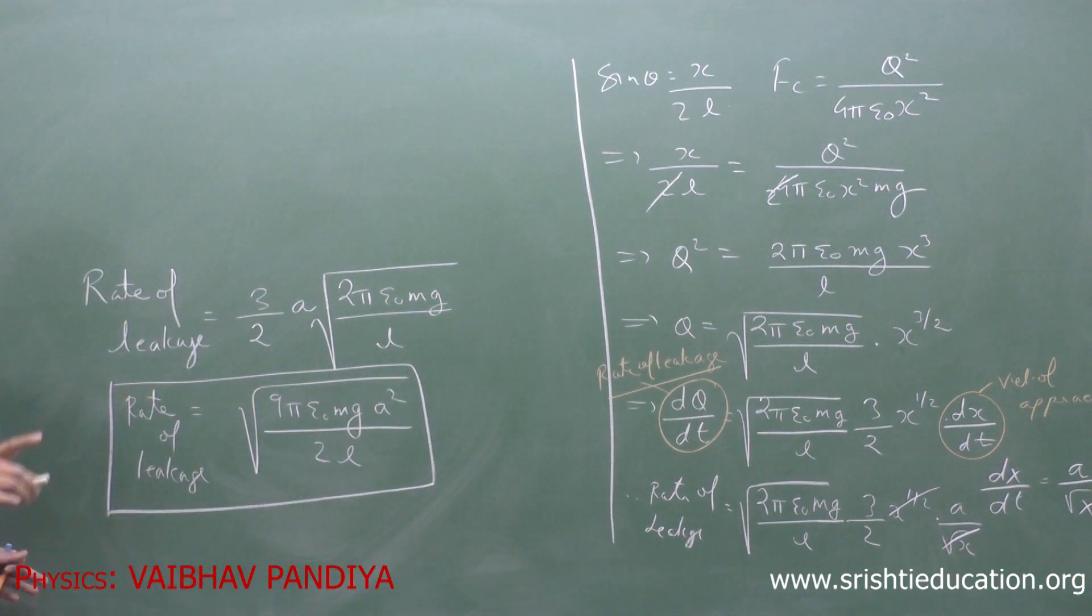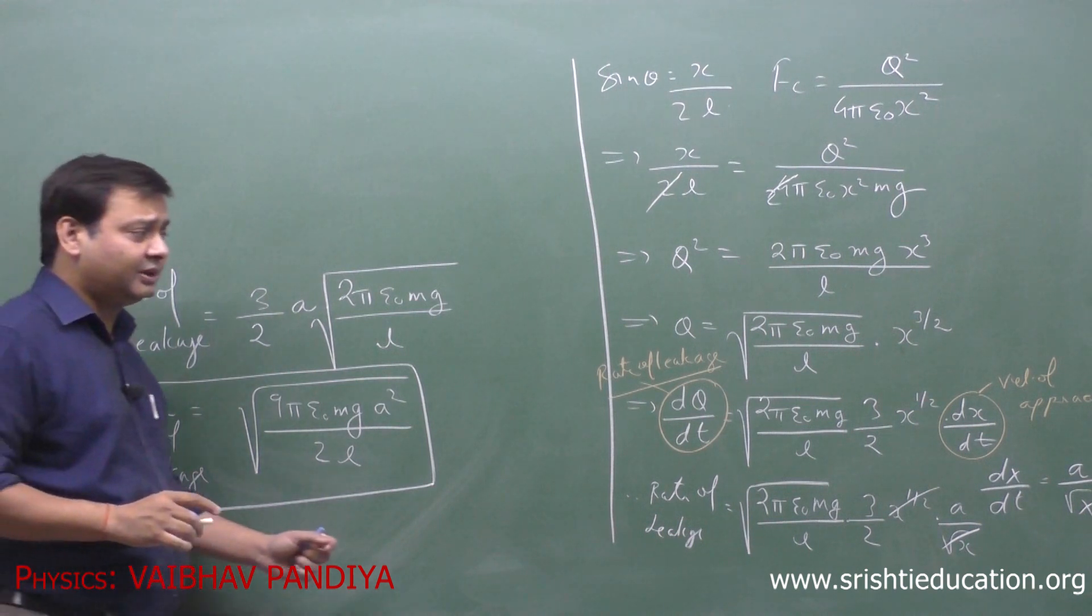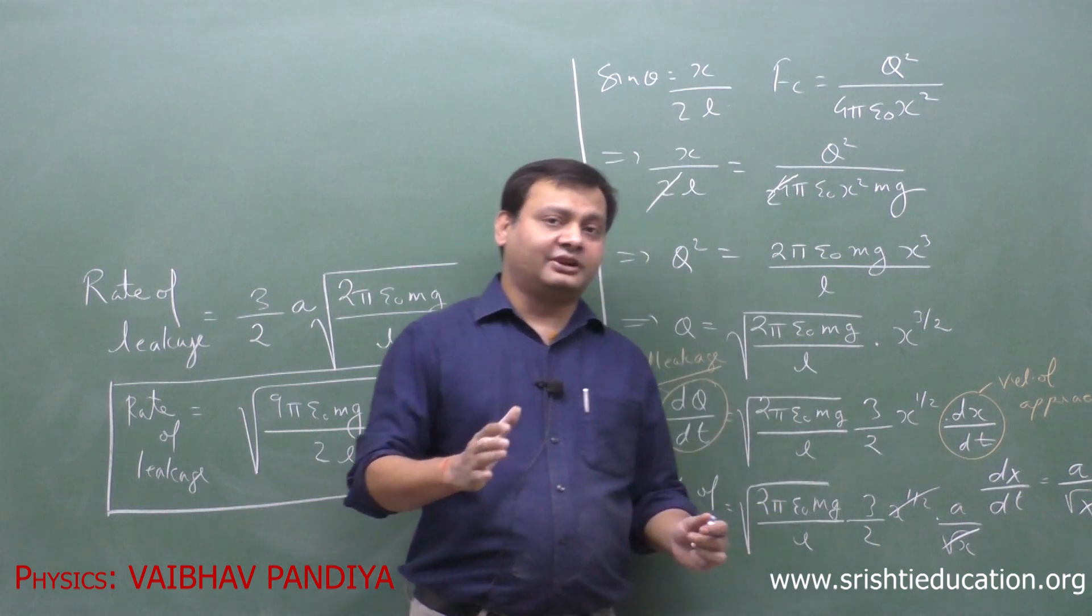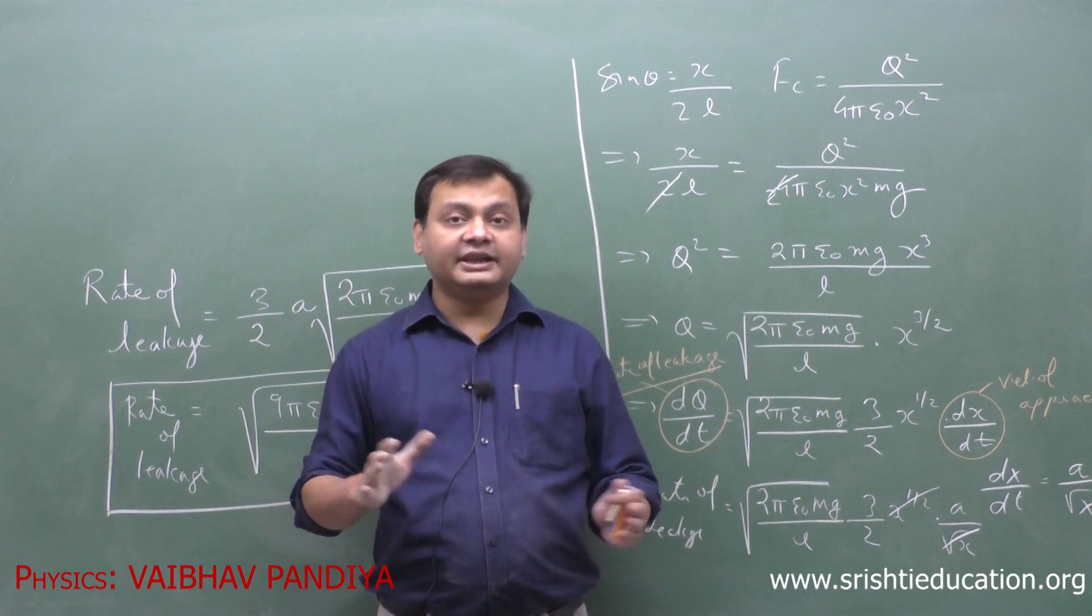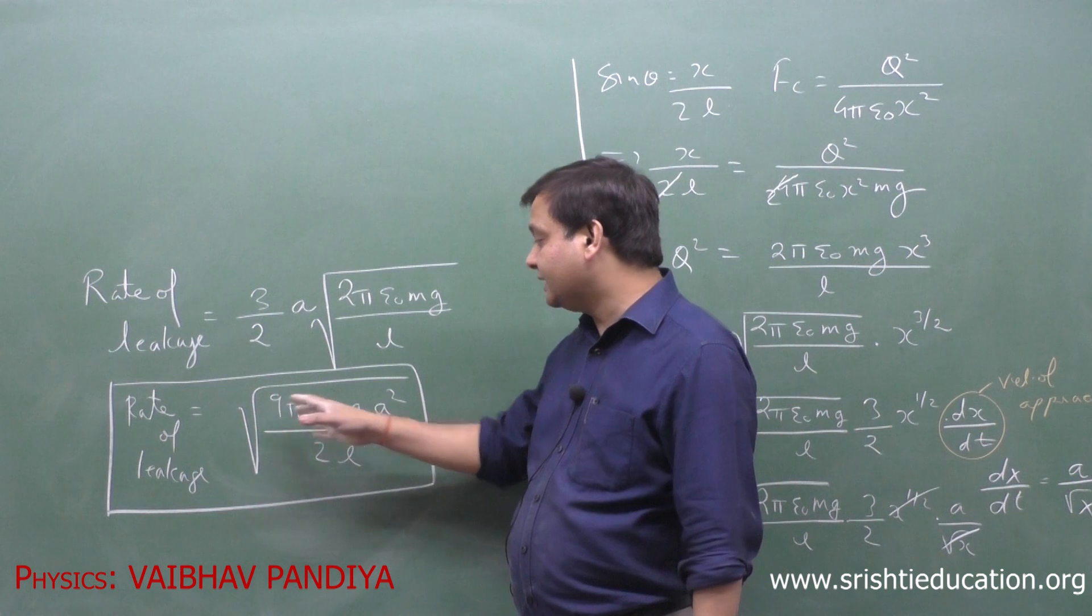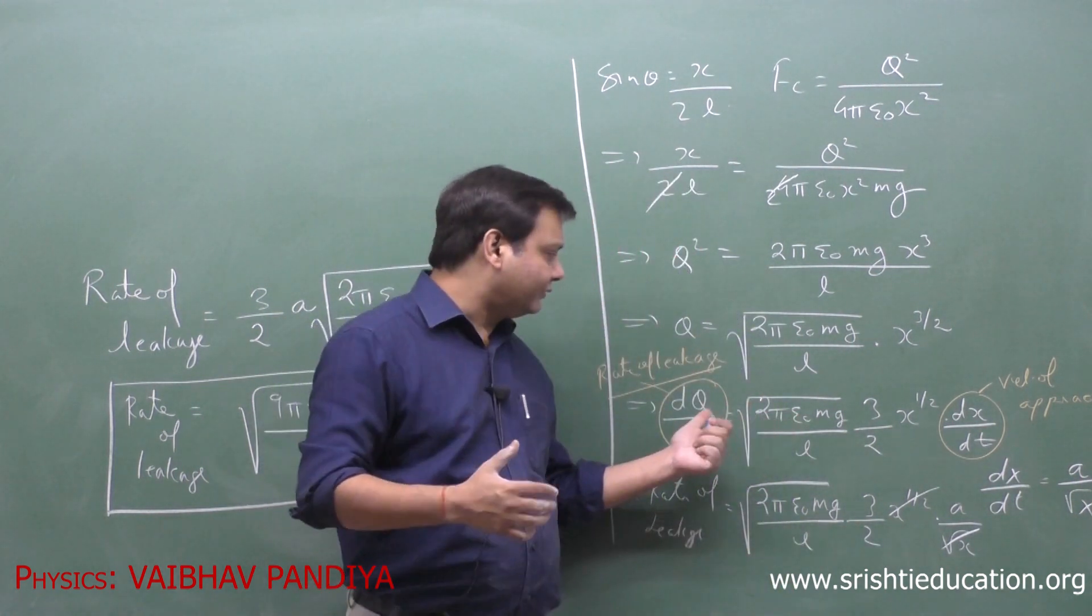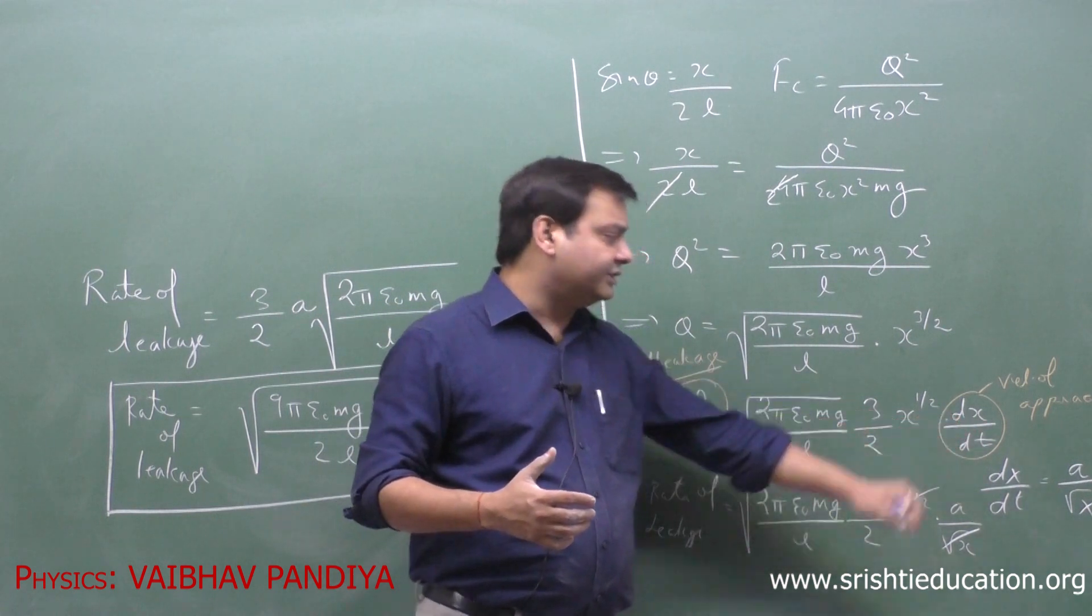Now you can see in this particular case, when dX by dt is a by root x, the rate of leakage does not depend on x. It is coming to be a constant value. But this is not always the case, because rate of leakage will depend on what is given for dX by dt.